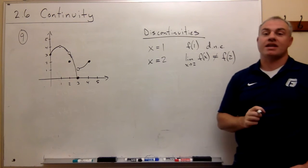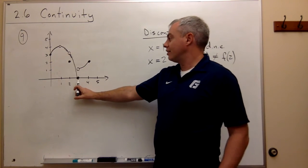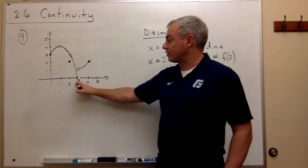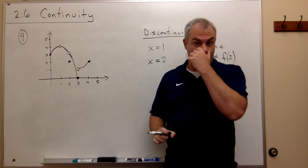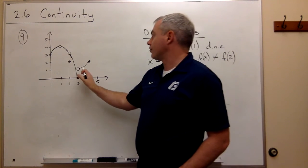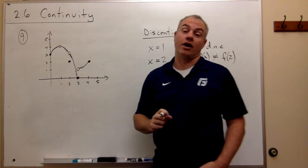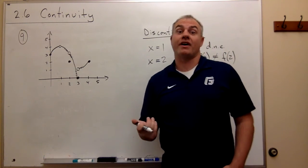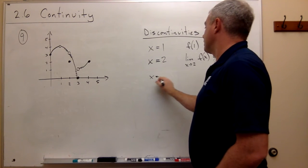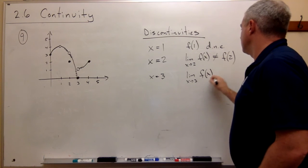What about at x equals three? First, is there a functional value? Yes, the functional value is zero — there is a point over three. Second, is there a limit value? As I come in from the right I'm getting close to one, and as I come in from the left I'm getting close to zero. So there is no limit value. Without a limit value it cannot be a continuous point. Another discontinuity is at x equals three because the limit as x goes to three of this function does not exist.